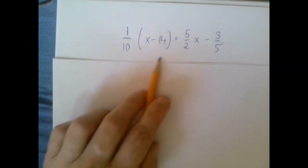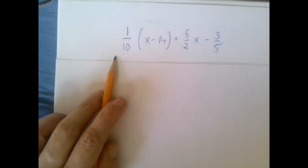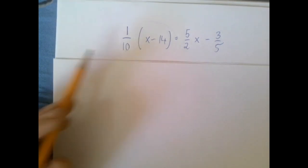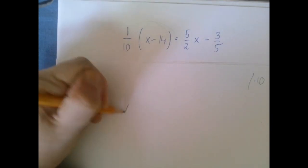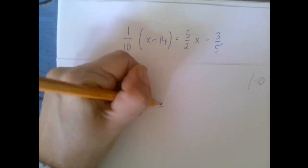When we're multiplying the left hand side by 10 all we're going to do is make this disappear. So after a multiplication by 10 we're going to get x minus 14 alone on the left hand side.